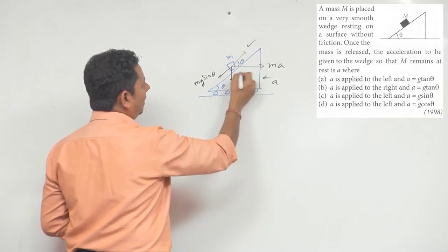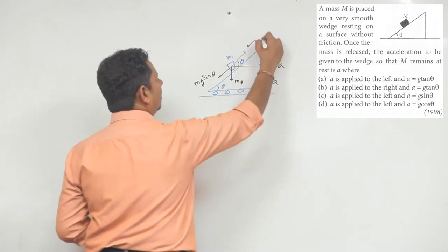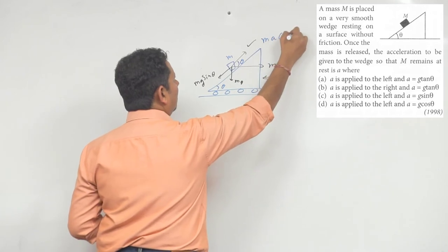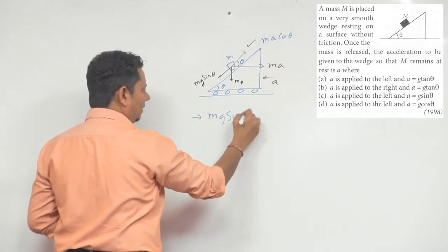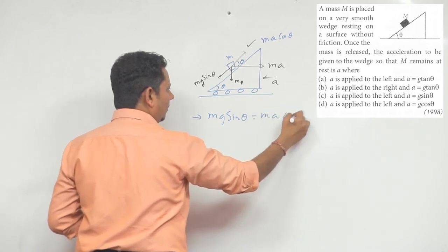If we look at the angle, if this angle is theta, then this angle will also be theta. So this component will be equal to ma cos theta. Our condition will be: mg sin theta should be equal to ma cos theta.